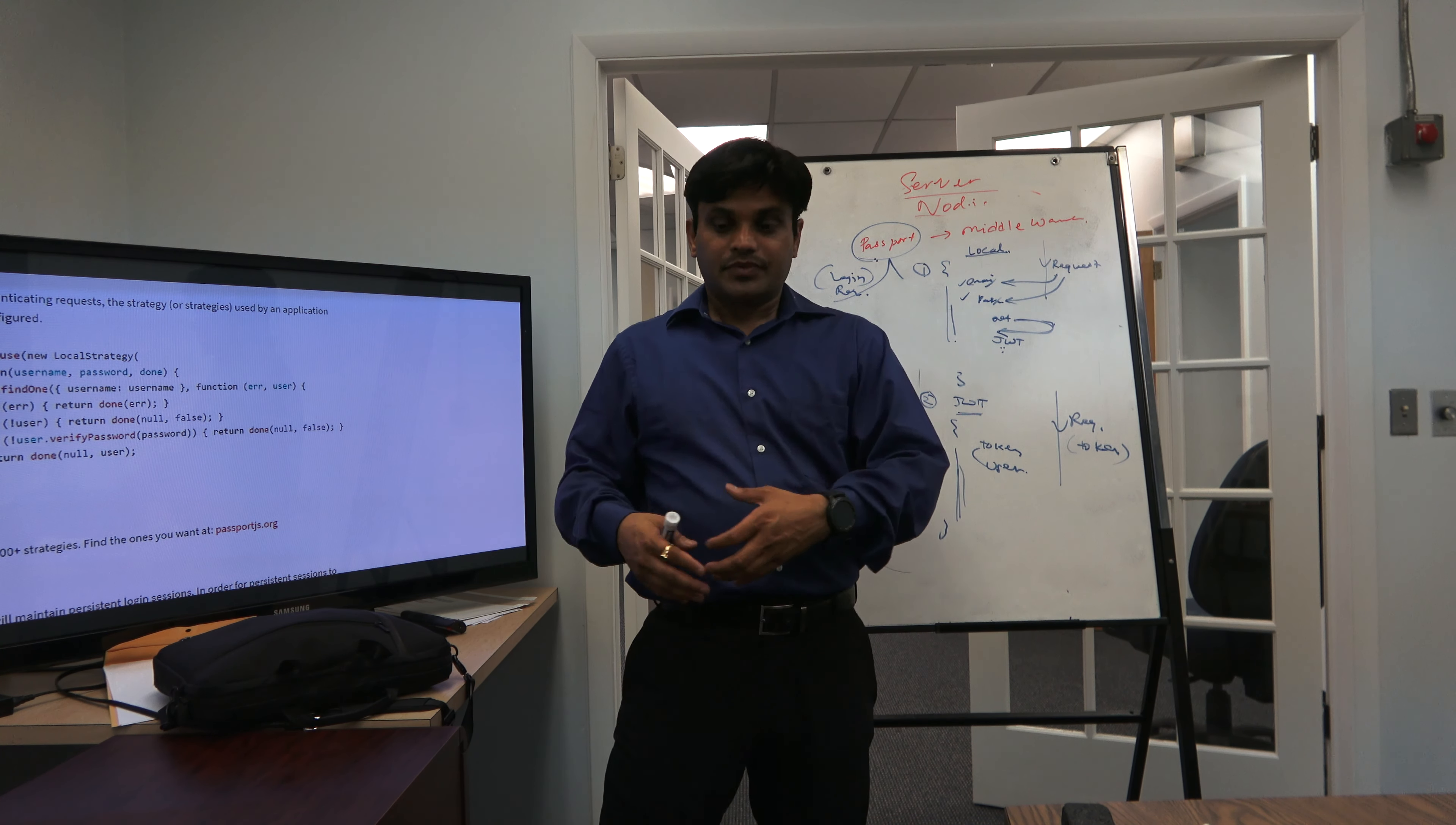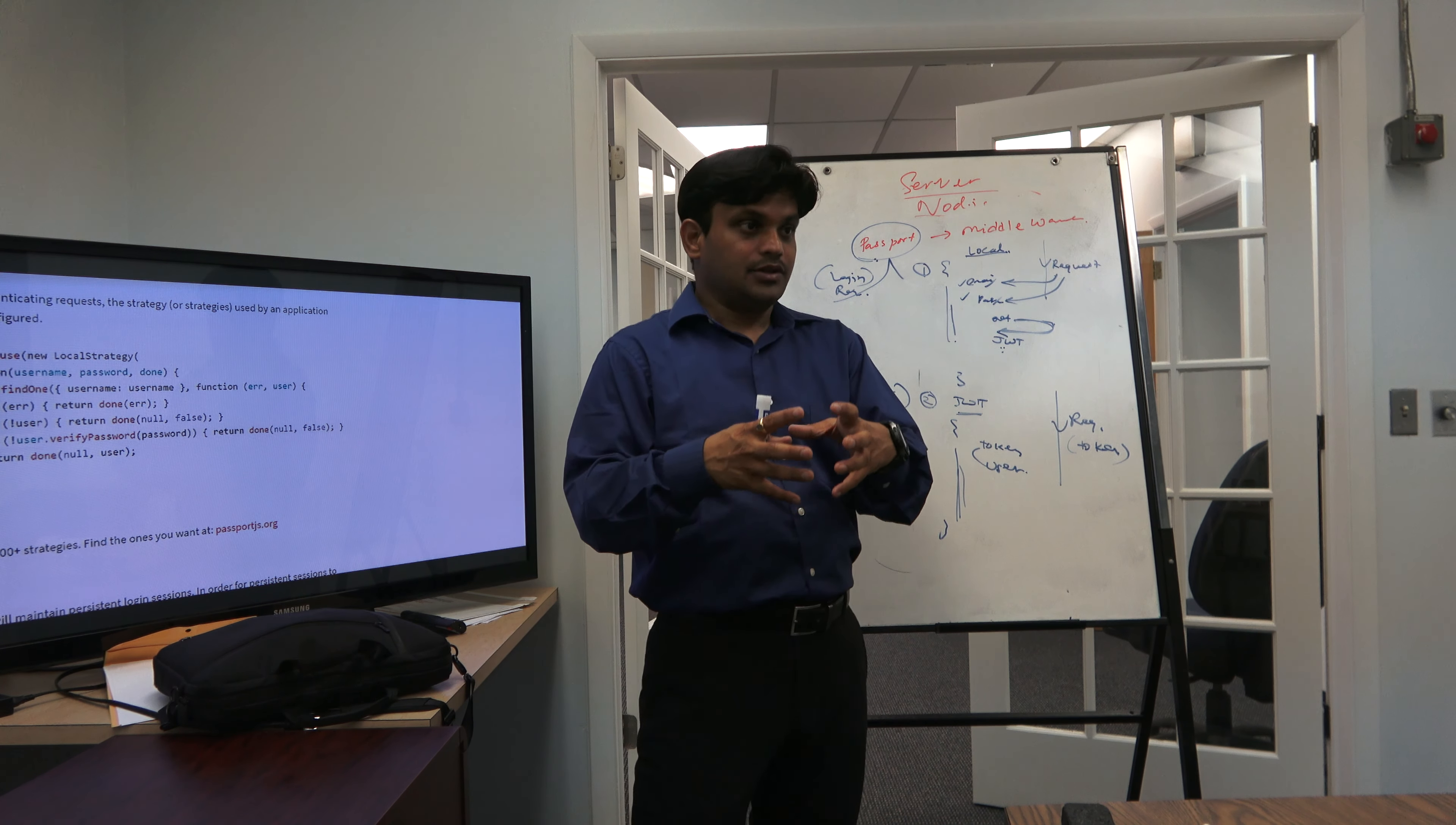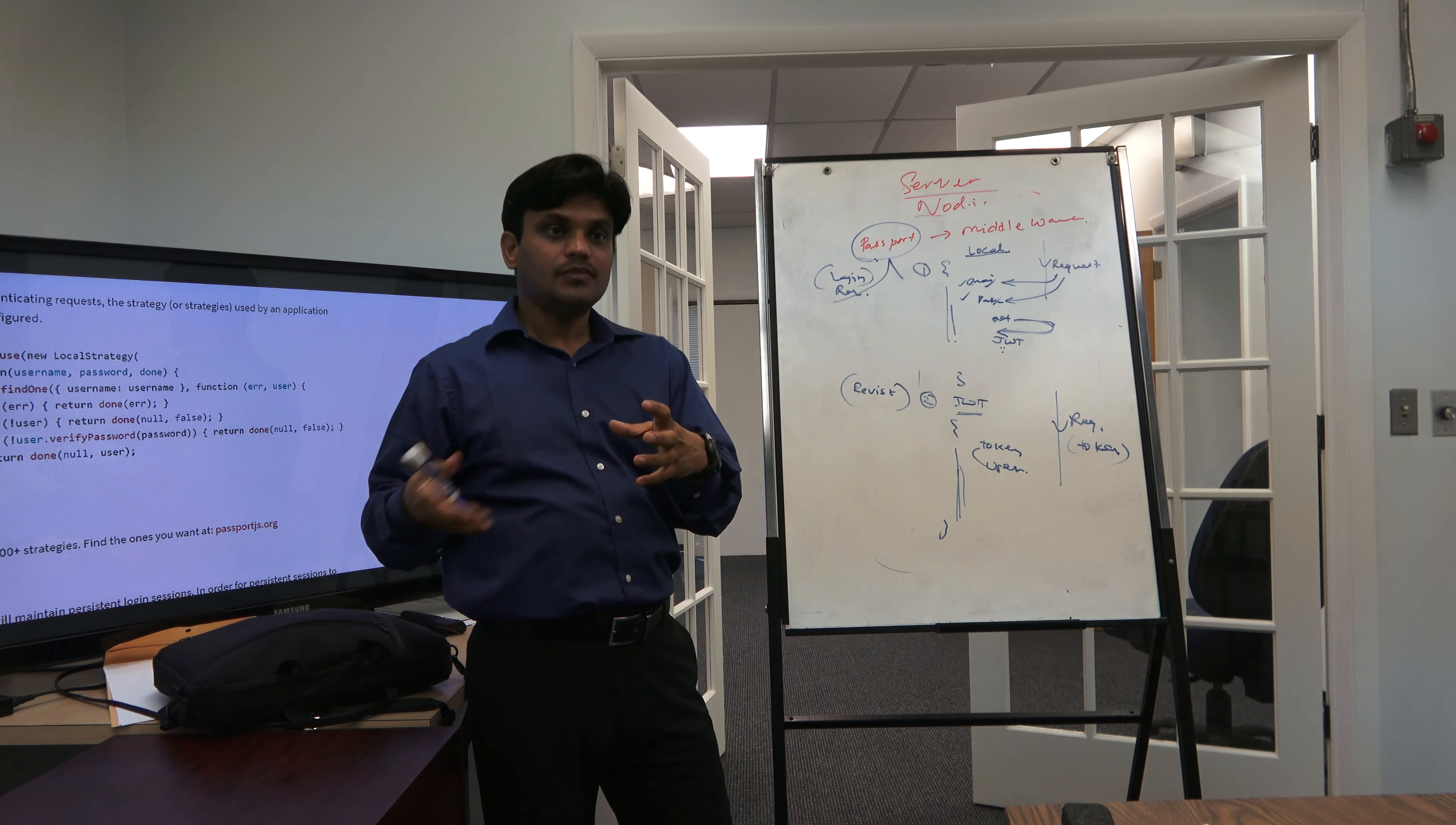Then that request comes to, let's say, the product route. In the product controller you will check if the request has a user, what was the ID of that user, what are the products he has purchased - you can do all of those things.